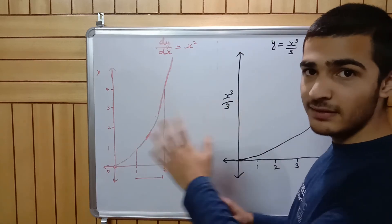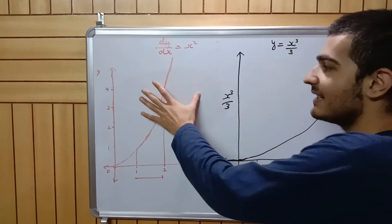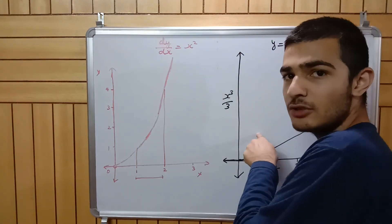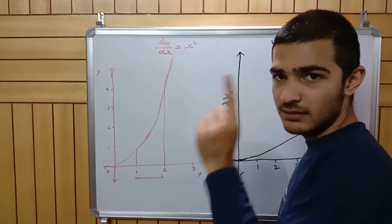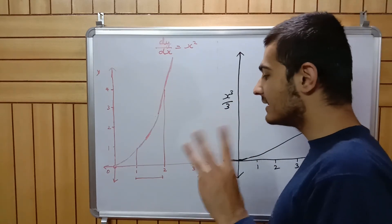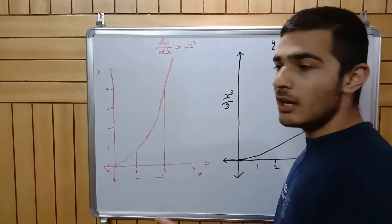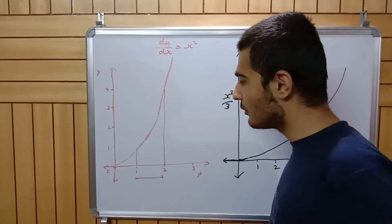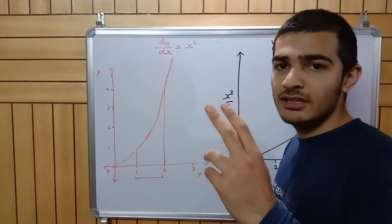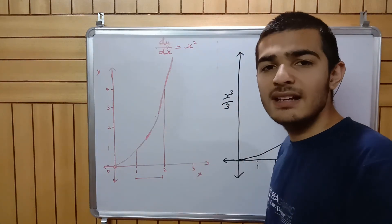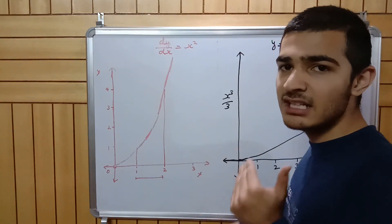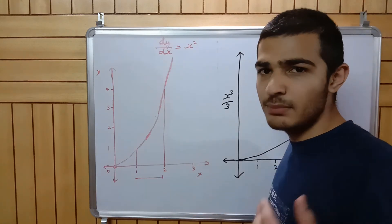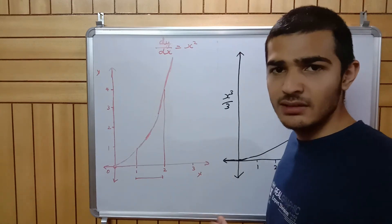I'll stop here before I start confusing you. Keep these points in mind: first, the height of the derivative function represents the slope of the actual function at the same point; and second, to find the area of this shape we need to find the average height of all those rectangles. We'll continue in the next video — I'd suggest watching it in continuation without a break to keep the chain of thought.